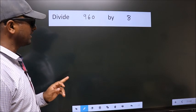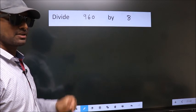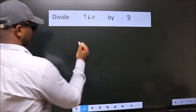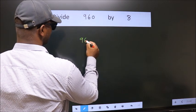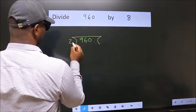Divide 960 by 8. To do this division, we should frame it in this way. 960 here, 8 here.